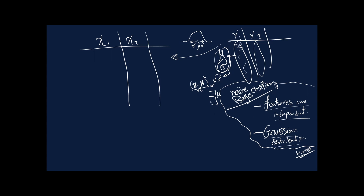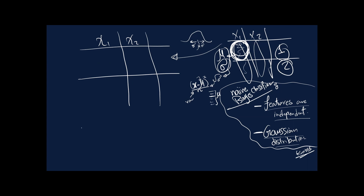Here we have our first distribution. For the first class and the second class, we will get the normal distribution. Using only the data points from the first class, we get the first distribution using the mu and sigma from those points. We repeat this for the second class, and for each feature. The distributions will differ according to the values inside.